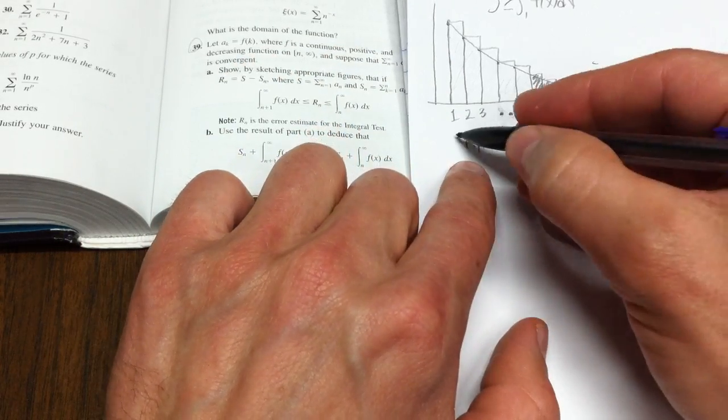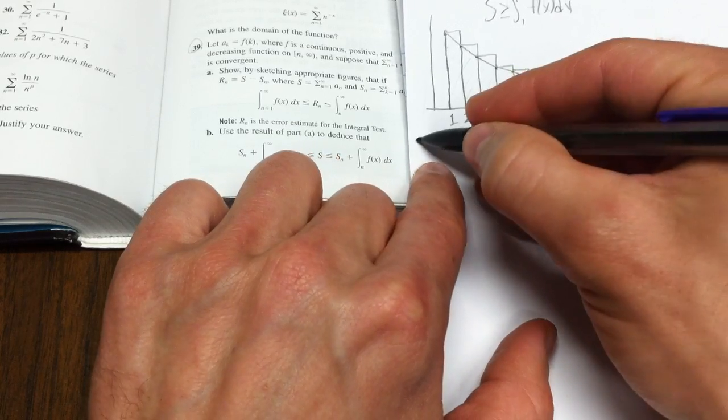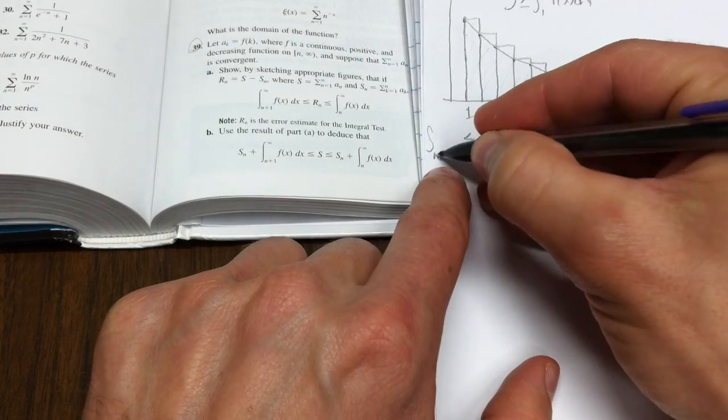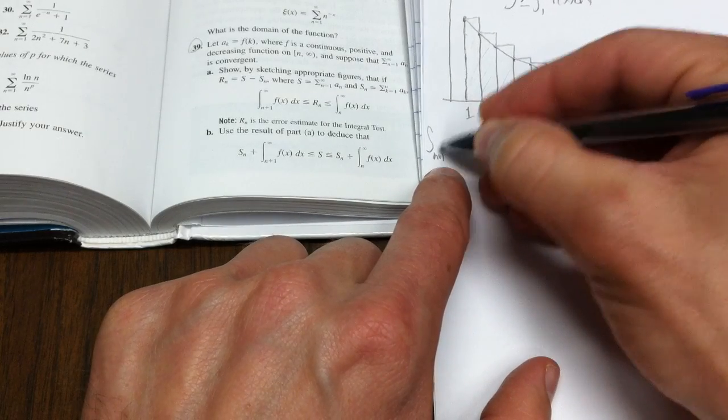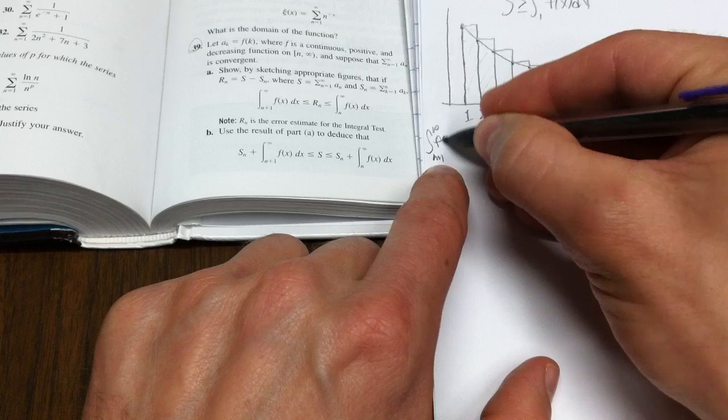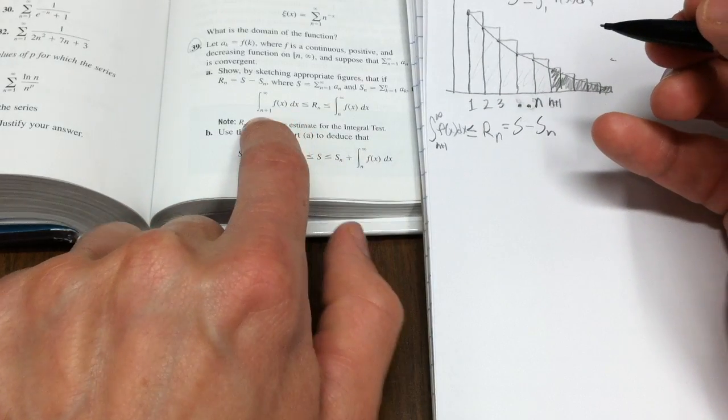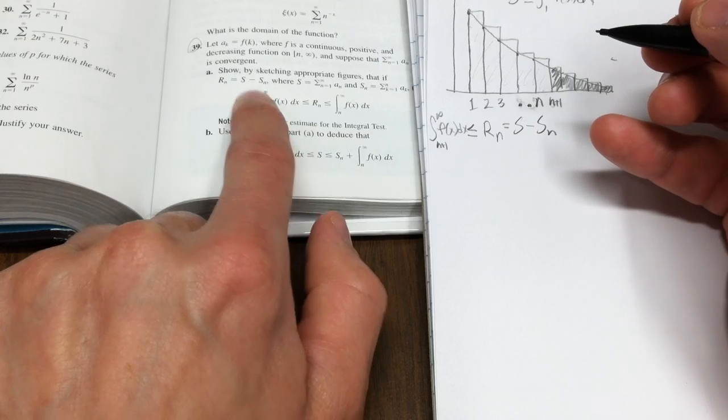Well, it's certainly bigger than the integral from, let's see, N plus 1 to infinity of f of x dx. Well, that's exactly what they're asking us to claim, that it's bigger than the integral from N plus 1 to infinity.